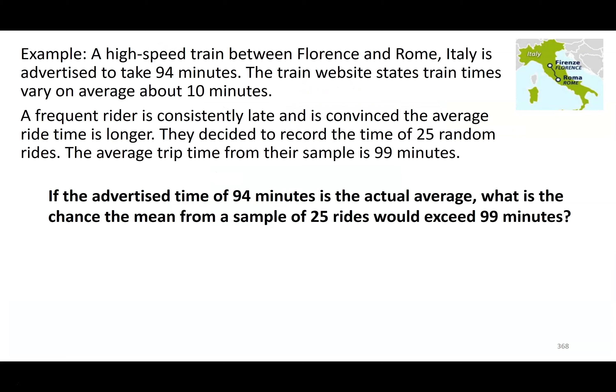This particular problem we're going to use throughout most of the lessons for this week. We have a high-speed train that goes between Florence and Rome in Italy. This company advertises that the average time to go between these two cities on this train system is 94 minutes. The website states the train times vary on average about 10 minutes — and remember, 'vary on average' is talking about a standard deviation.